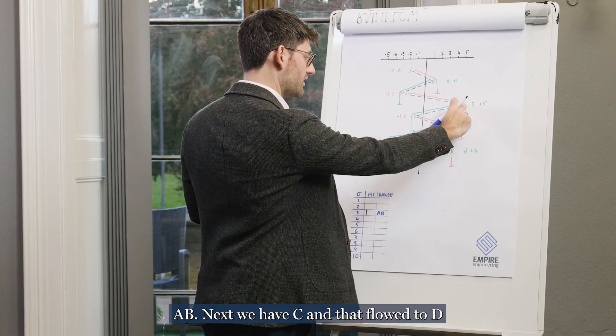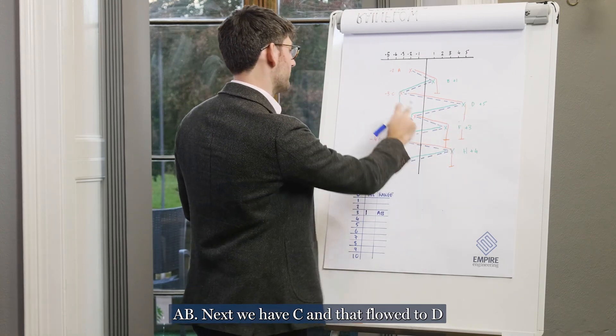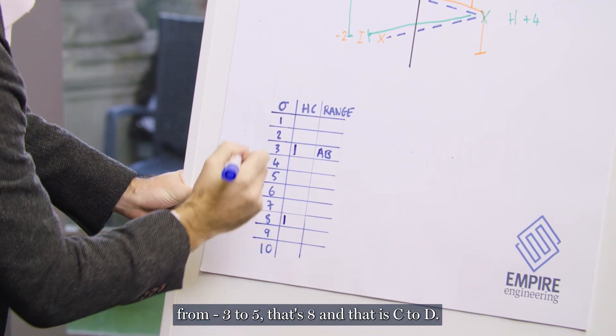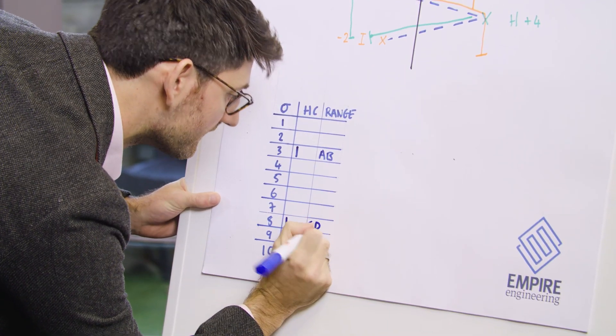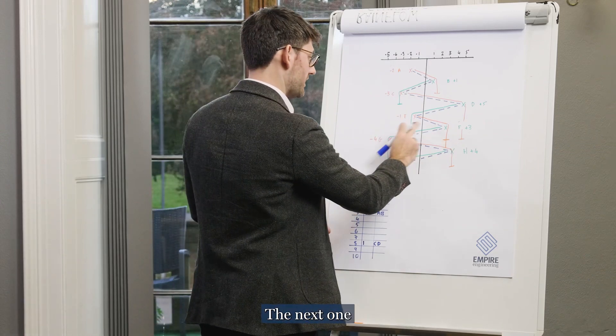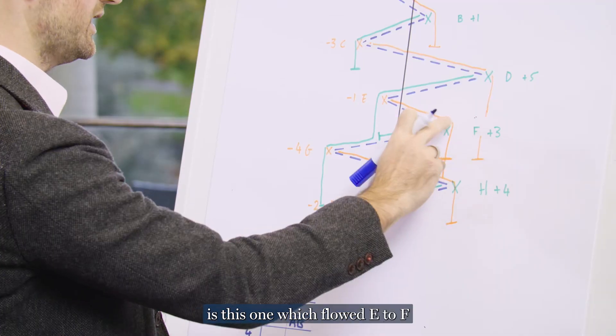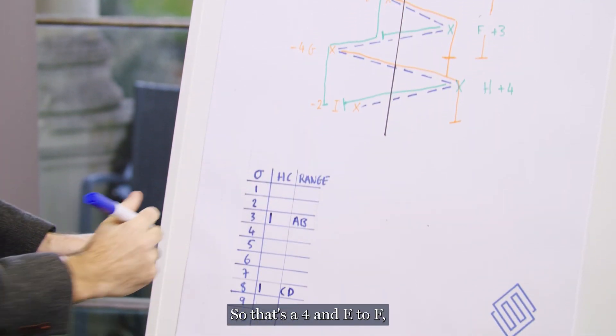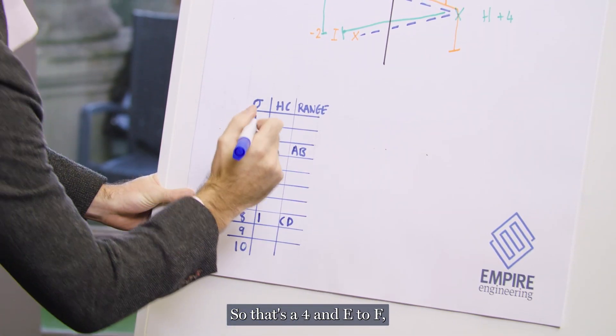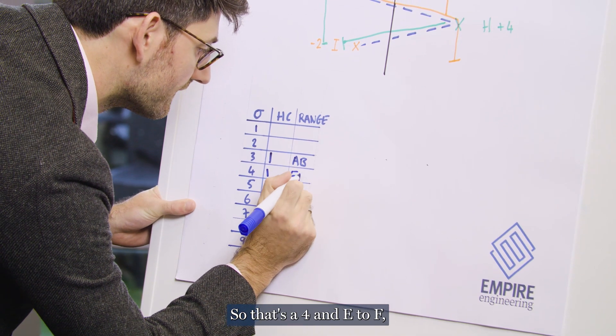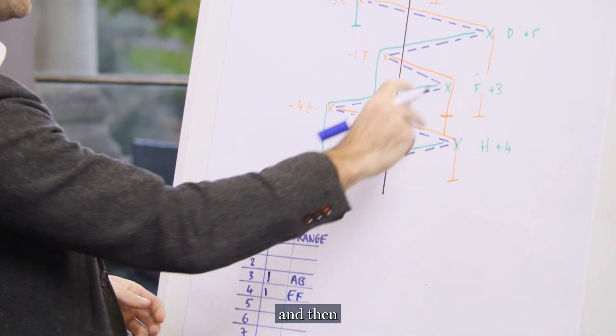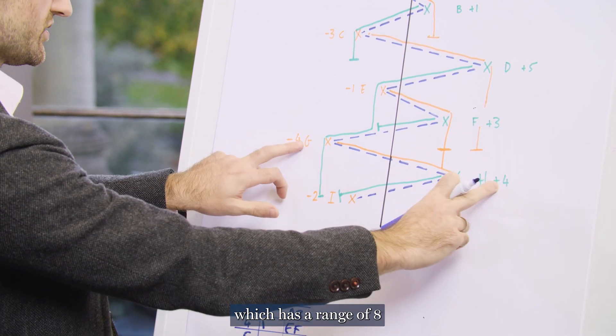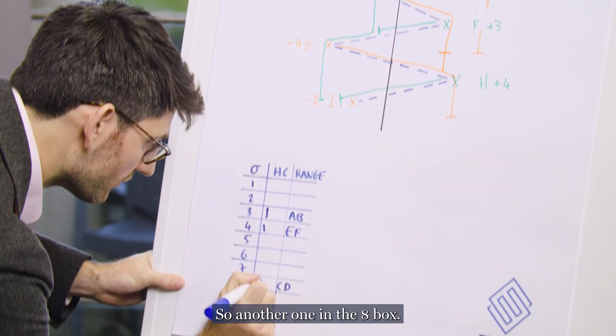Next we have C and that flowed to D from minus three to five. That's eight and that is C to D. The next one is this one which flowed E to F and dropped off from minus one to plus three. So that's a four and E to F. And then our next one is this G to H which has a range of eight.